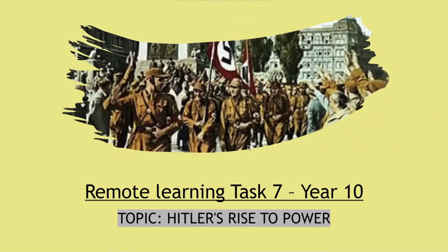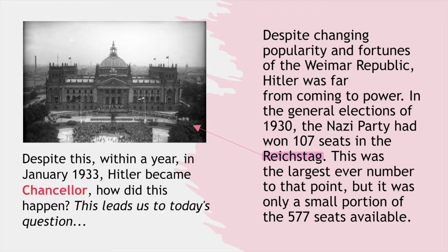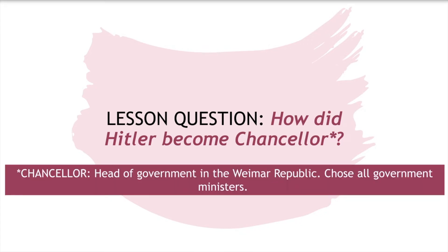Hello Year 10, this is a video in relation to Remote Learning Task 7. I will be telling you the story of how Hitler became Chancellor of Germany in 1933, which will allow you to answer our overall lesson question: how did Hitler become Chancellor?